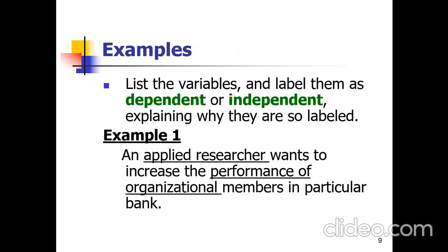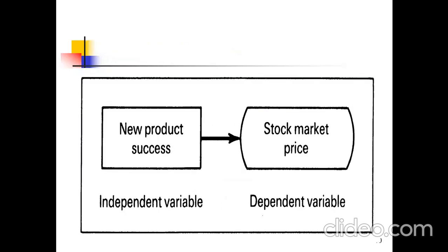Here is an example: an applied researcher wants to increase the performance of organizational members in a particular bank. A figure explains the relationship between independent and dependent variable — the independent variable is new product success and the dependent variable is stock market price. The arrow shows that new product success influences stock market price.